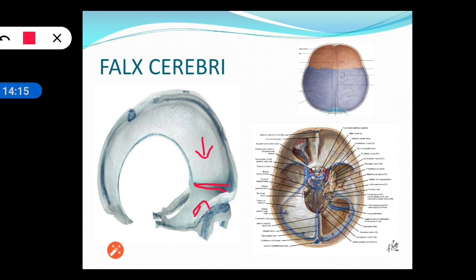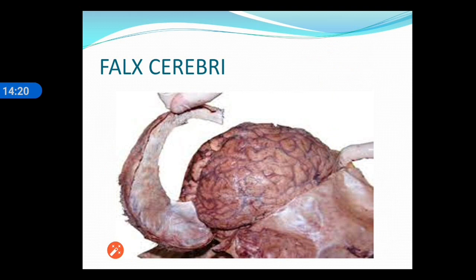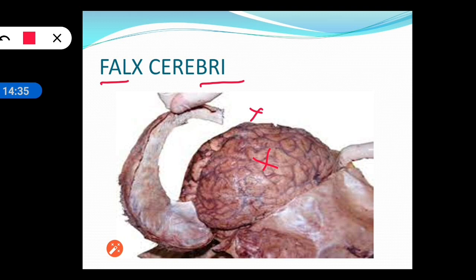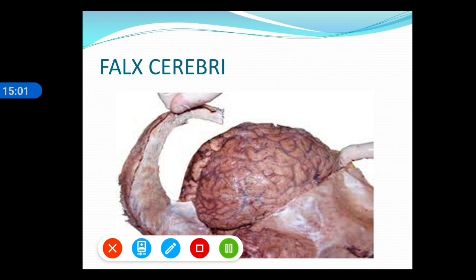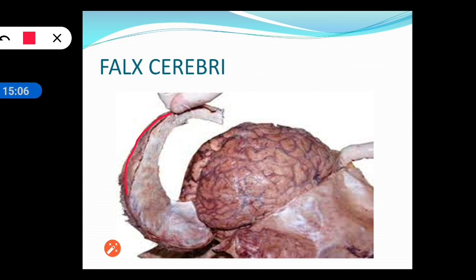To summarize the falx cerebri: it is a sickle-shaped fold of dura mater present between the cerebral hemispheres. Its anterior end is attached to the crista galli and its posterior end to the upper surface of the tentorium cerebelli. The outer convex margin is attached to the sagittal sulcus of the vault of the skull. The sinus in the outer convex margin is the superior sagittal sinus, and in the inner concave margin is the inferior sagittal sinus.